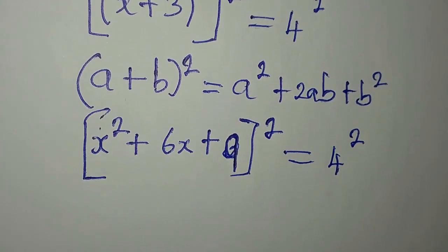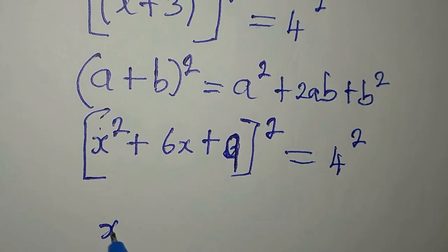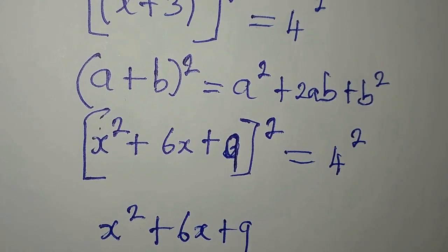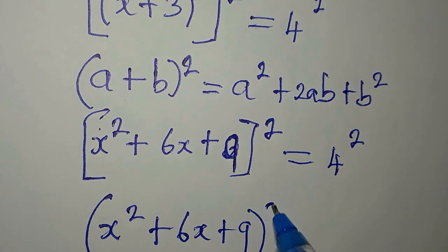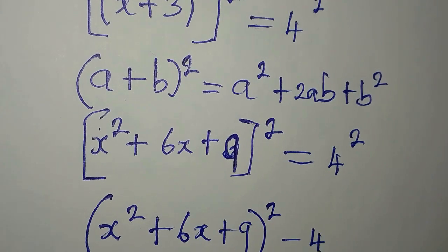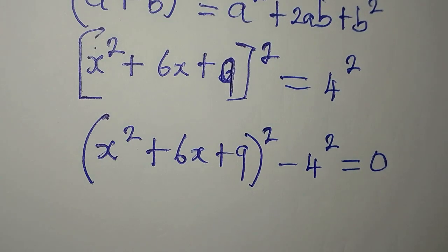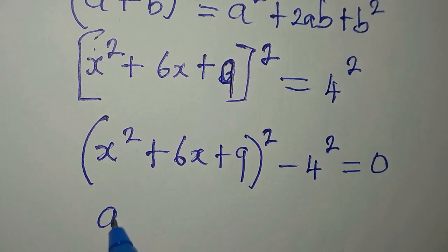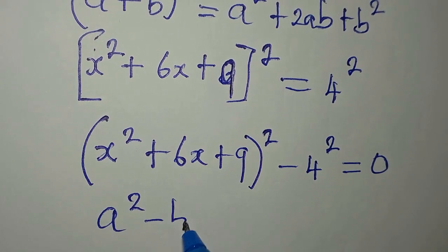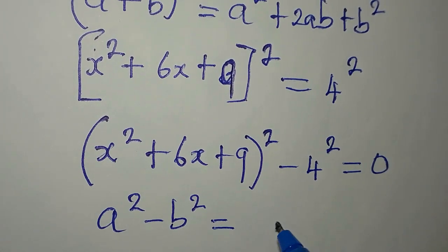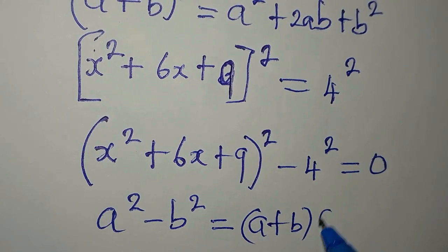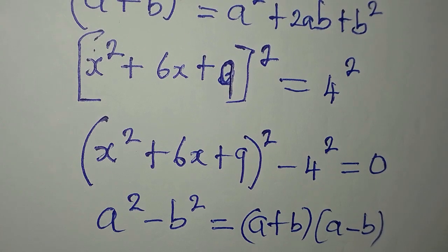What if we bring everything to the same side? Then we have x squared plus 6x plus 9 to the power of 2, minus 4 to the power of 2, equals 0. Now we can apply the difference of two squares: if you have a squared minus b squared, you get a plus b into a minus b.